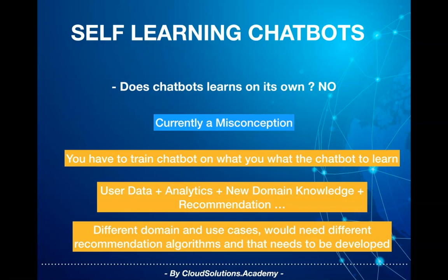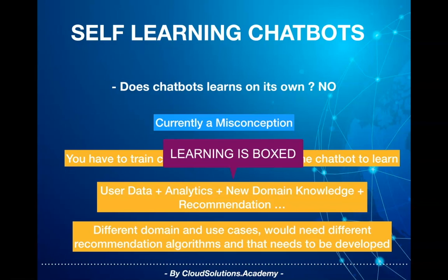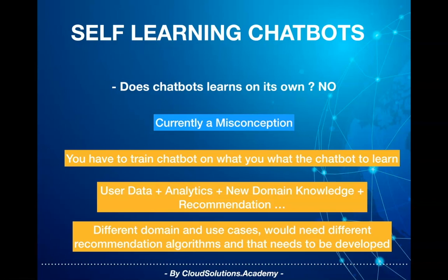The important point to note is that the learning itself is boxed. For instance, a chatbot that assists you in booking restaurants can recommend similar restaurants, but it can't recommend places to stay — it only knows about your restaurant taste. All this data and feedback needs to be designed and developed, and seeing chatbots learn on their own is quite misleading, because you need to spend time and effort building the feedback and recommendation system for each domain.